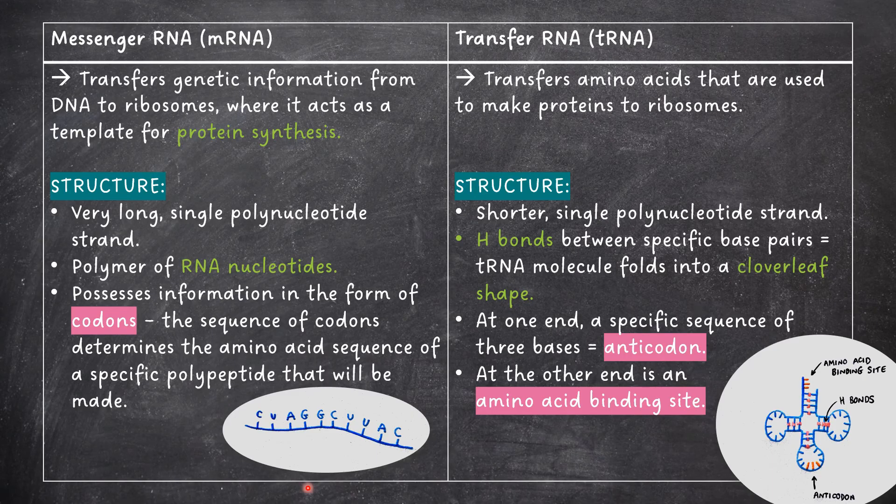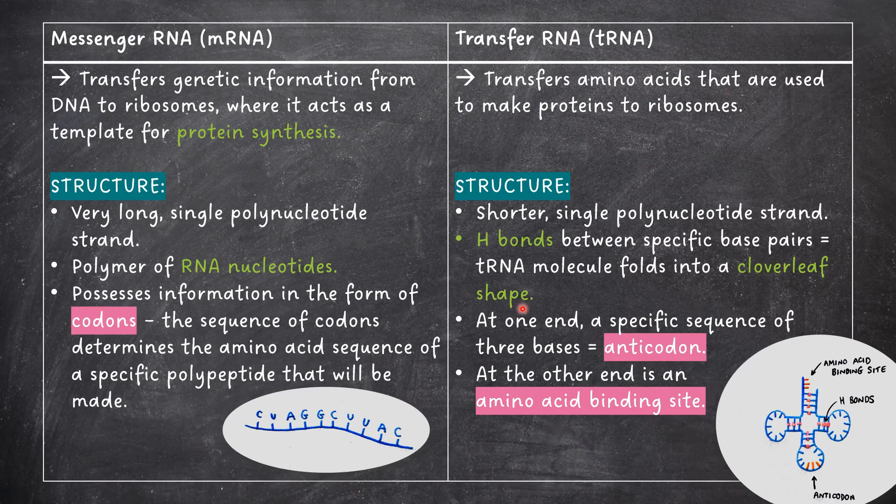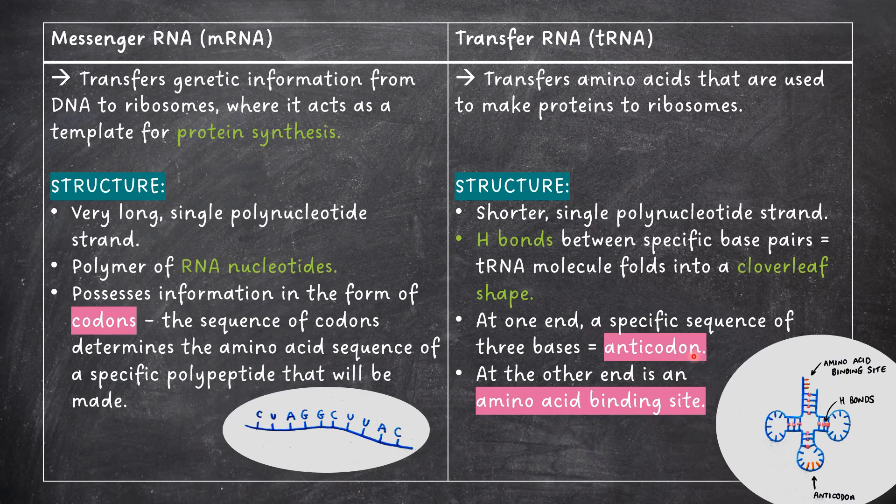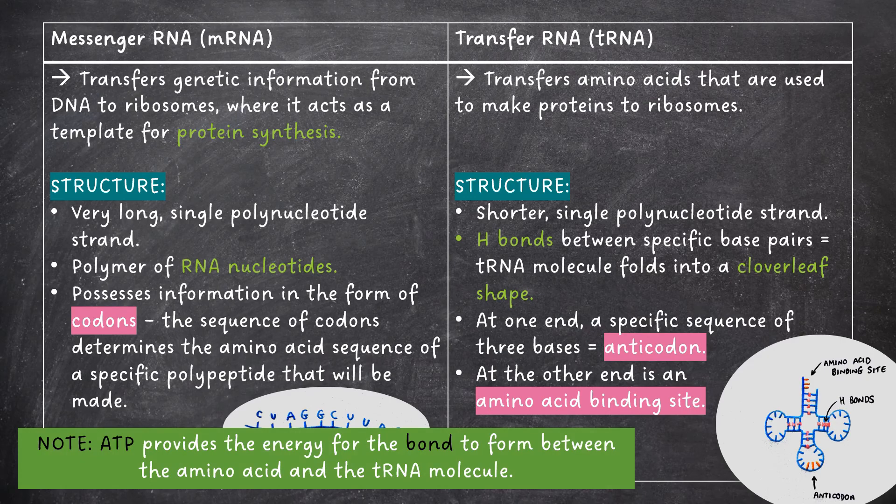tRNA on the other hand is a shorter single polynucleotide strand. Hydrogen bonds between specific base pairs cause the molecule to fold into a cloverleaf shape. At one end there is a specific sequence of three bases known as an anticodon which is complementary to a specific tRNA codon. At the other end there is an amino acid binding site. Note that ATP provides the energy for the bond to form between the amino acid and the tRNA molecule.